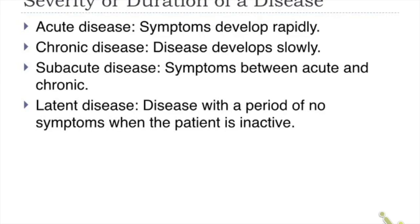Regarding severity and duration: in acute disease, symptoms develop rapidly — flu is an example of acute disease. In chronic disease, the disease develops slowly — tuberculosis is an example. Something in between is called sub-acute. A latent disease is a type where there is a period of no symptoms when the organism is inactive.